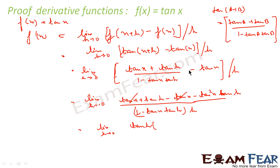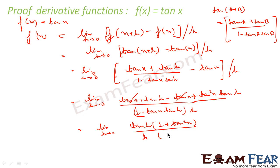The minus signs work out to give plus here, so the numerator becomes (1 + tan²x)·tan h, and the denominator is h·(1 - tan x·tan h).